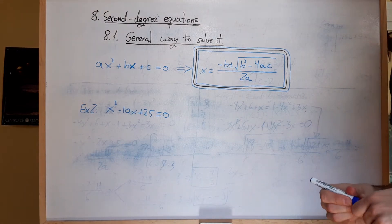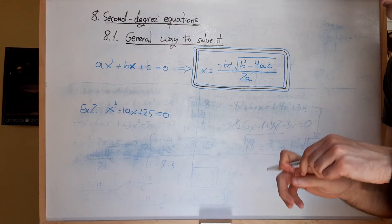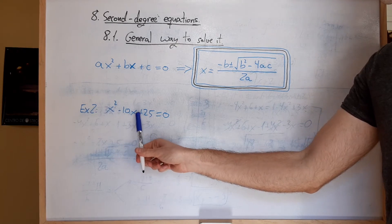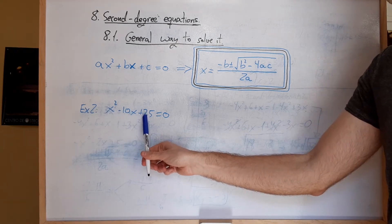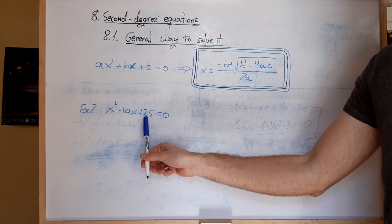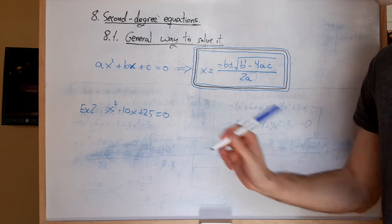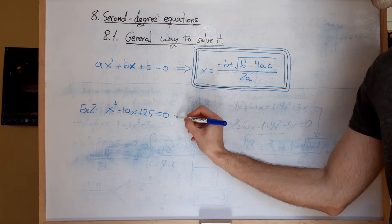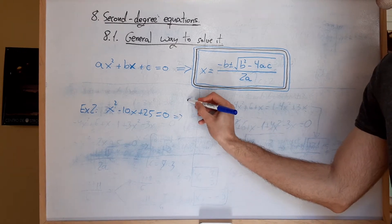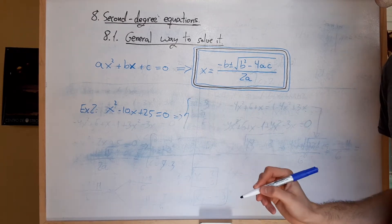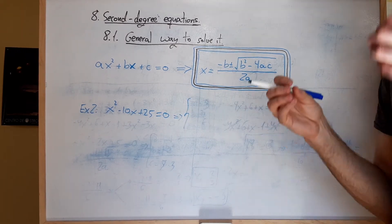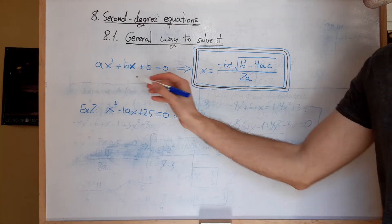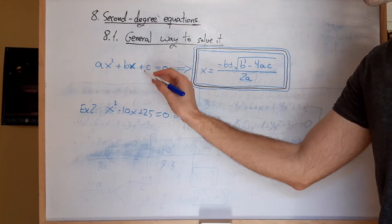Let's see another example. Let's say we have now x squared minus 10x plus 25 equals 0. In this case, as we did before, we need to be really sure about who's a, b, and c.